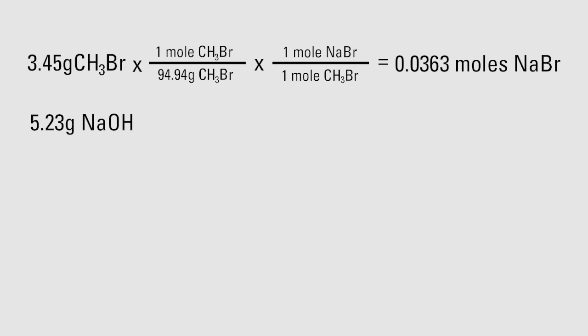Multiply 5.23 grams of sodium hydroxide times 1 over the molar mass, or 1 mole of sodium hydroxide over 39.99 grams of sodium hydroxide. Then multiply by the ratio of sodium bromide to sodium hydroxide reaction coefficients, which is 1 to 1.